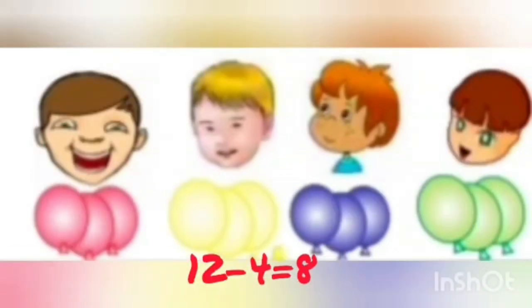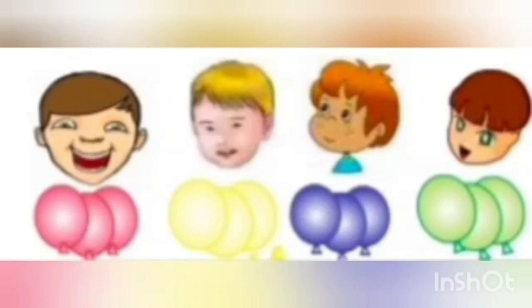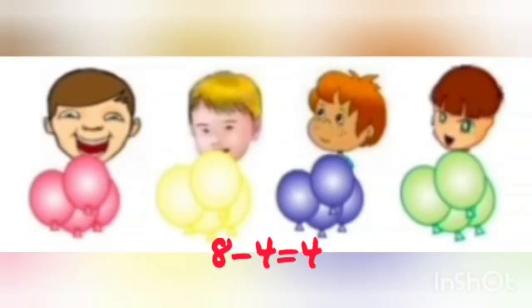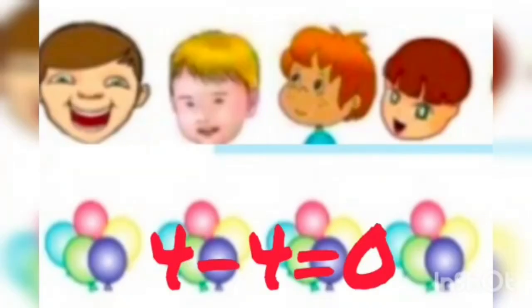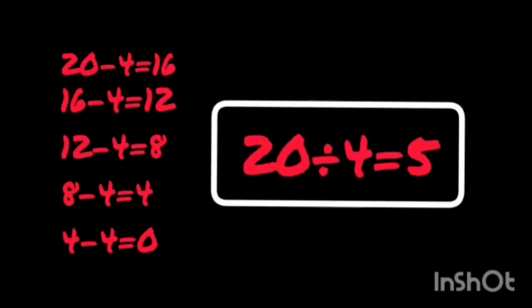Again take 4 balloons and give 1 balloon to each child. 8 minus 4 is equal to 4; 4 balloons are left. We again take these 4 balloons and give 1 balloon to each child. 4 minus 4 is equal to 0. No balloon is left behind. We have subtracted 5 times, so 20 divided by 4 is 5.